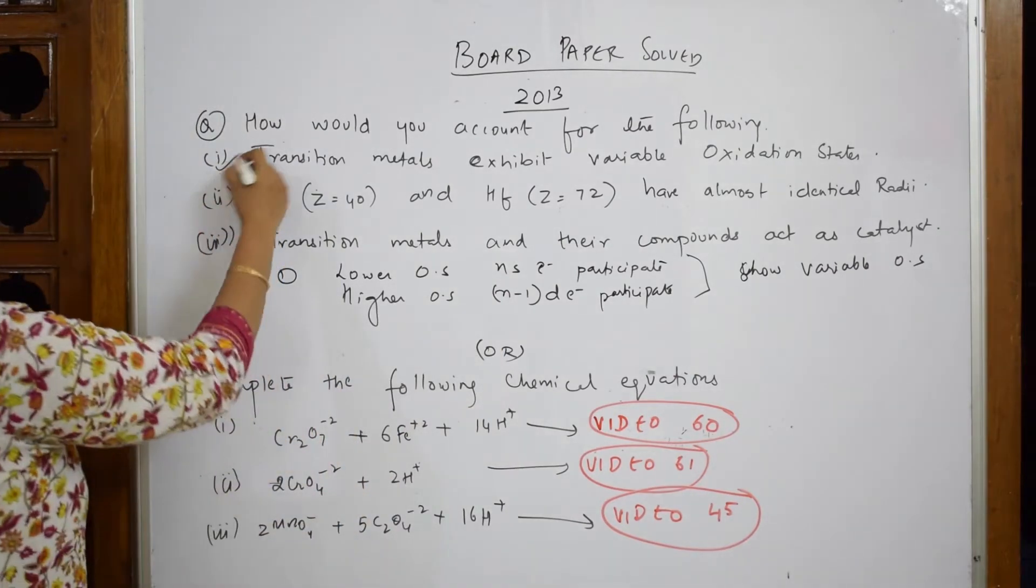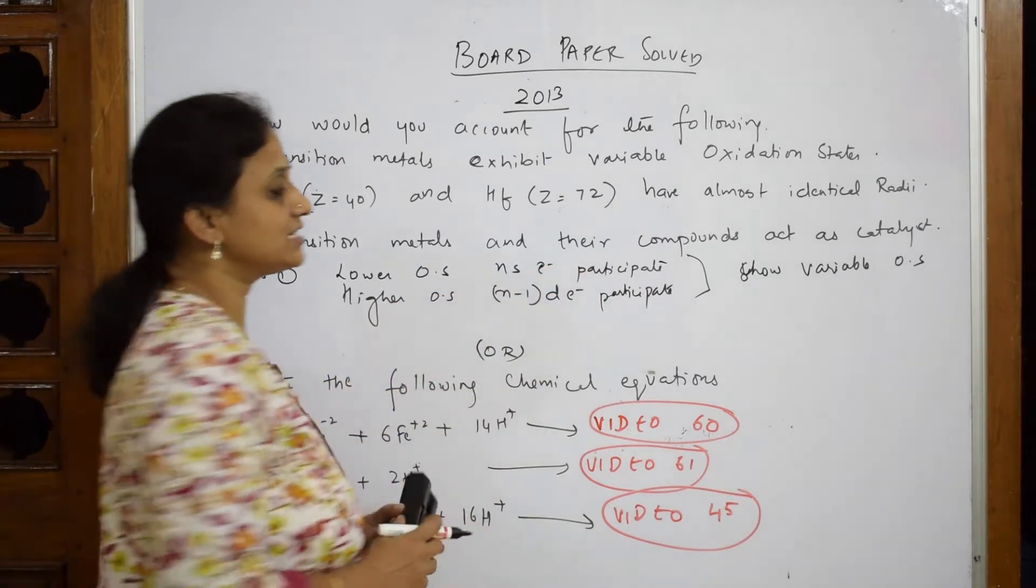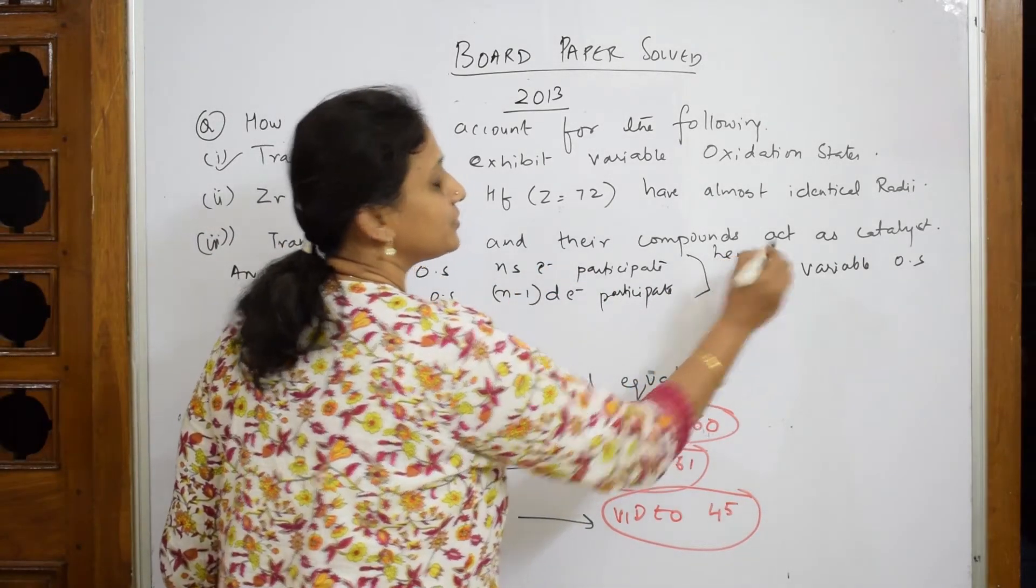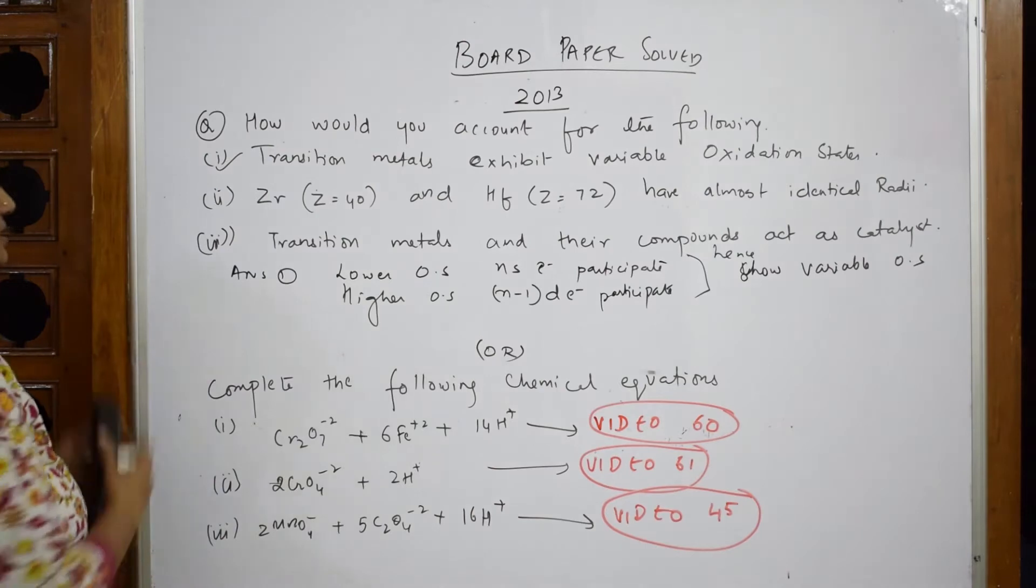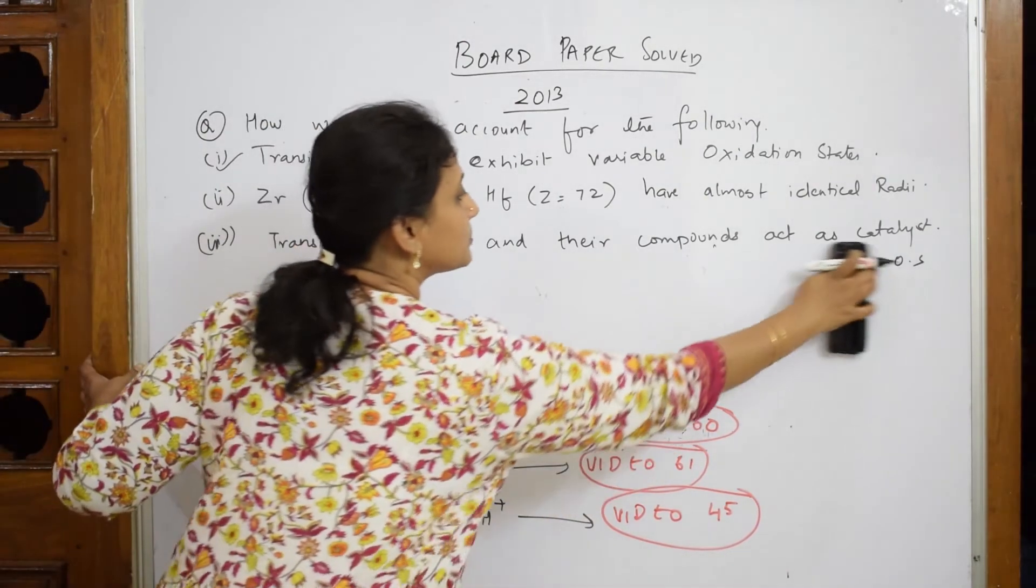So we have answered the first question. Clearly explained for one mark. Half mark for this, half mark for this. Hence show, you can write. Hence show and finish off your answer. So let us erase this and do the second one. I mean I have to write the second answer. Most important.